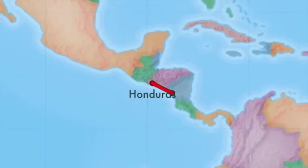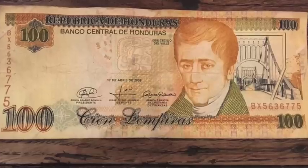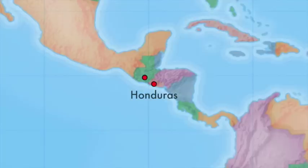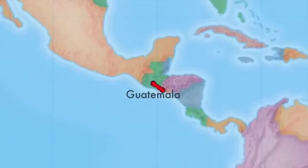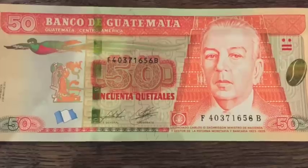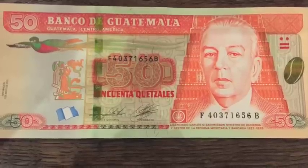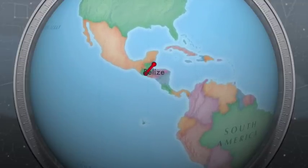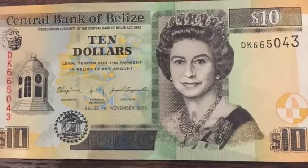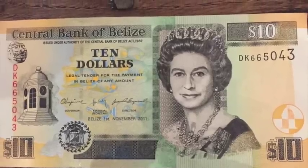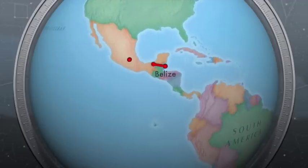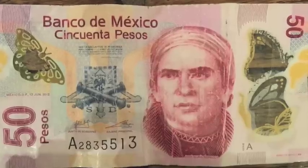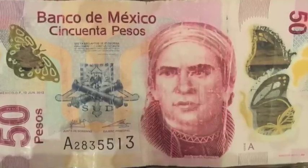From Nicaragua we head over to Honduras, where they use Lempiras. From Honduras we get on the plane and go to Guatemala — this is what the money looks like in Guatemala. From there we head over to Belize, a beautiful tourist destination — there's the Queen again, she's all around the world! From Belize we head to Mexico, where they use pesos.